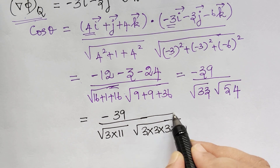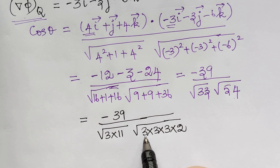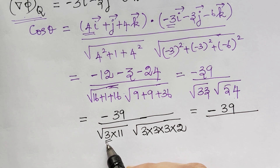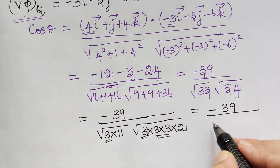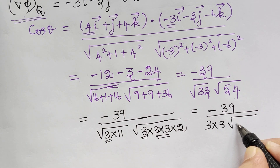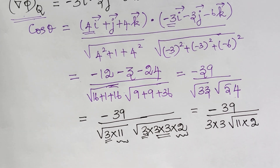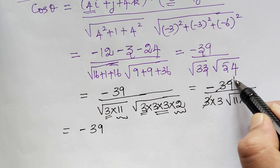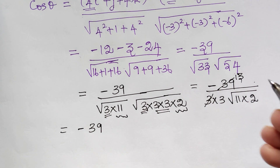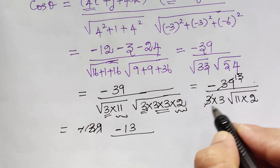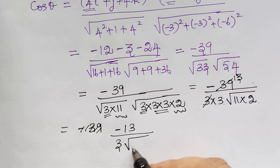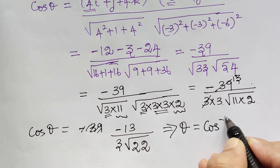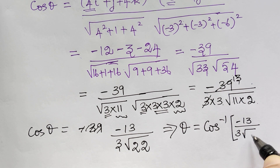Reducing to prime factors to simplify: √33 × √54 = √(3×11) × √(9×6) = 3√(11×2) = 3√22, after cancelling common factors. The numerator -39 and denominator have a common factor of 3: -39 / (3 × 3 × √22) simplifies — 39 divided by 3 is 13 — giving cos θ = -13 / (3√22). Therefore, θ = cos⁻¹(-13 / (3√22)), which is the angle between the normals to the given surface at the two points P and Q.